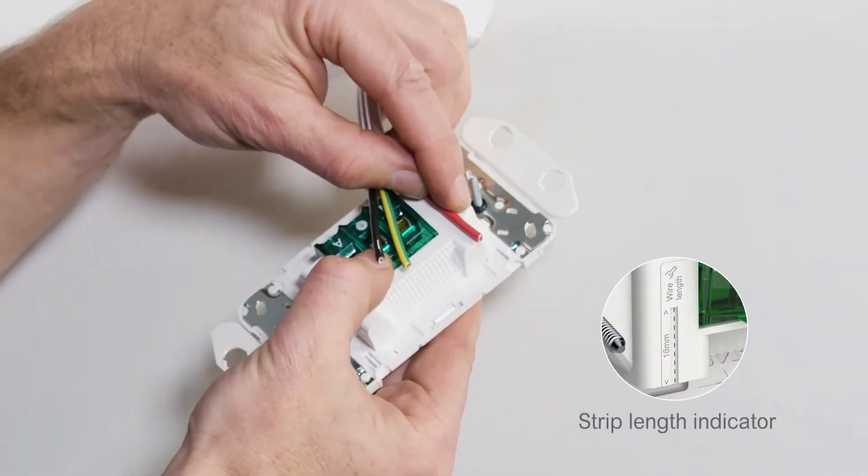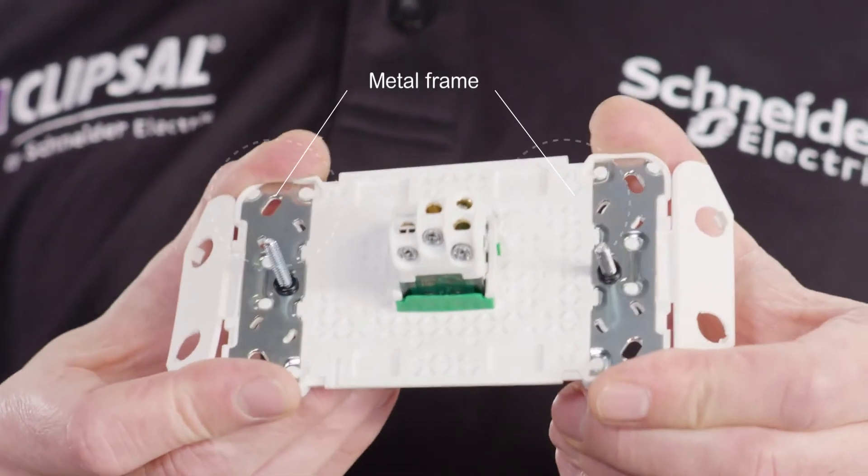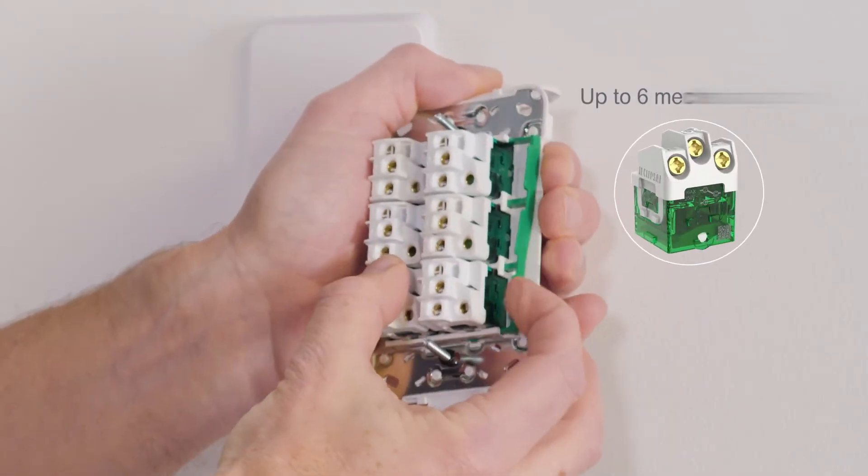Each grid also features a strip-length indicator. There are strong metal frames on the grids, and they can take up to six mechs.